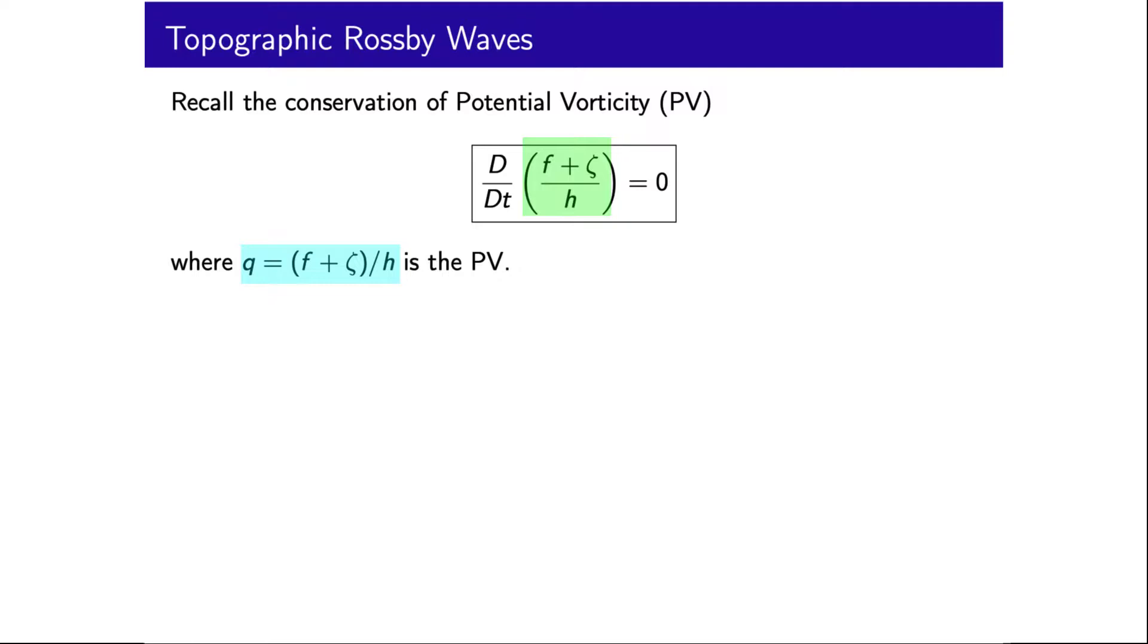If H is constant and f has some latitudinal gradient, then in order to maintain this quantity in the presence of small perturbations in f, the relative vorticity of the fluid ζ must adjust to account for these perturbations. This leads to a net effect whereby westward propagating planetary Rossby waves are generated.